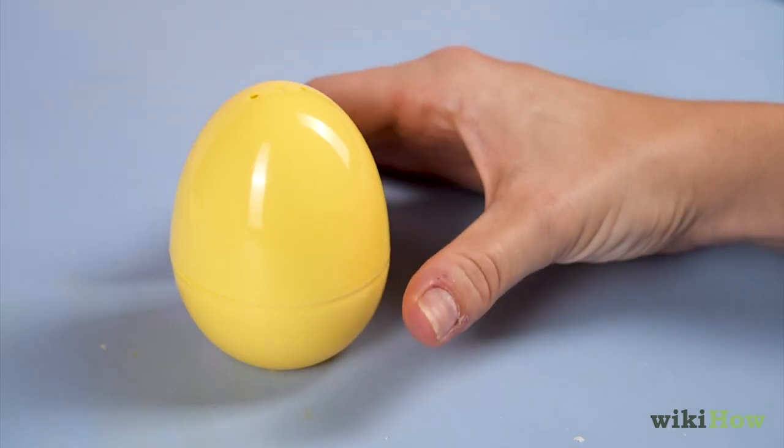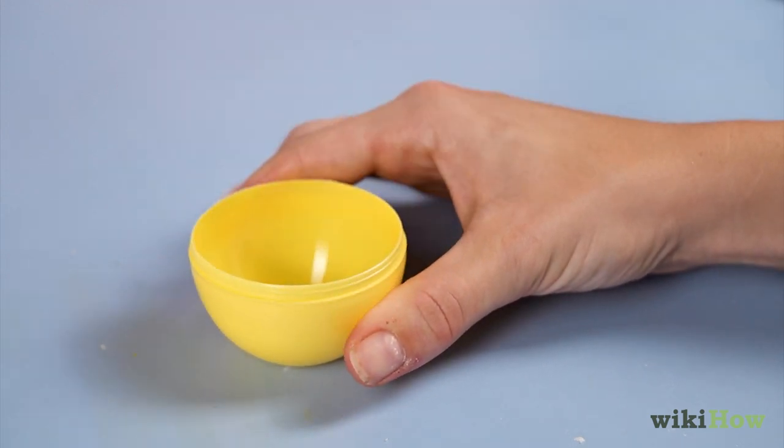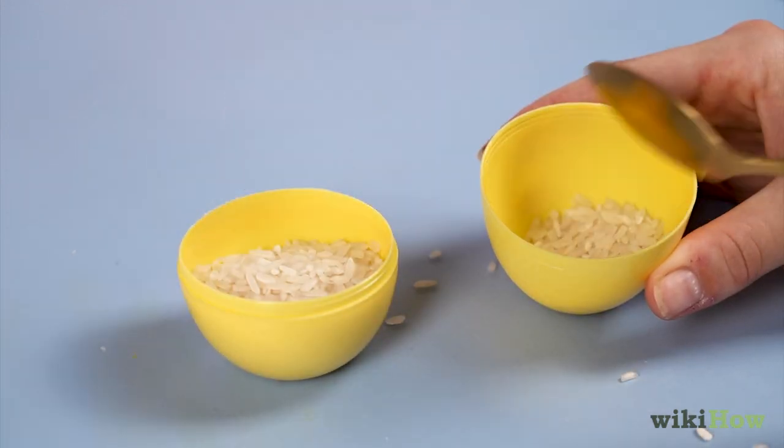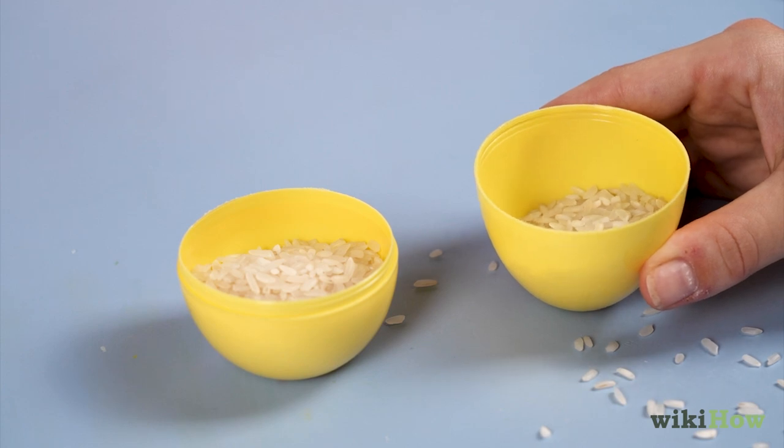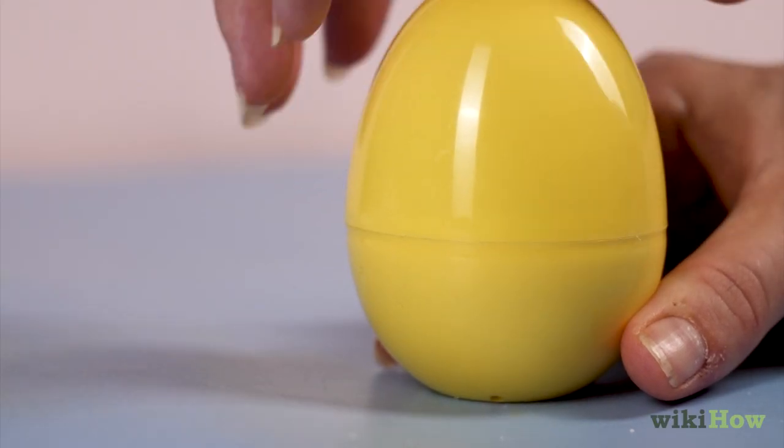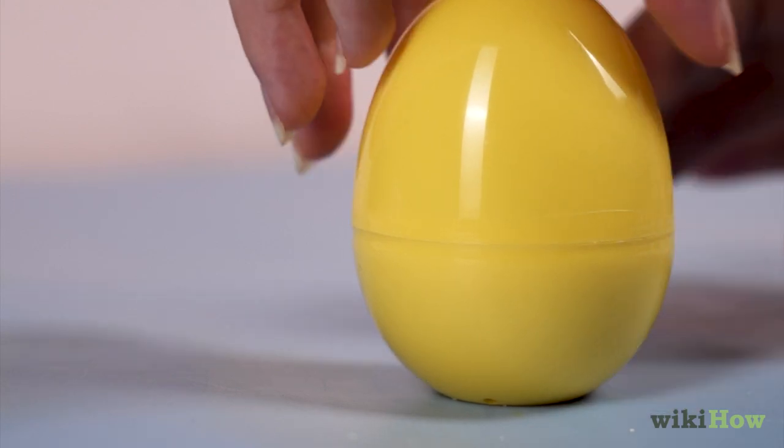To make plastic egg maracas, open two plastic Easter eggs and fill each half with dry rice or small beads. Close the egg after filling it, resting it in between the bowl of two spoons.